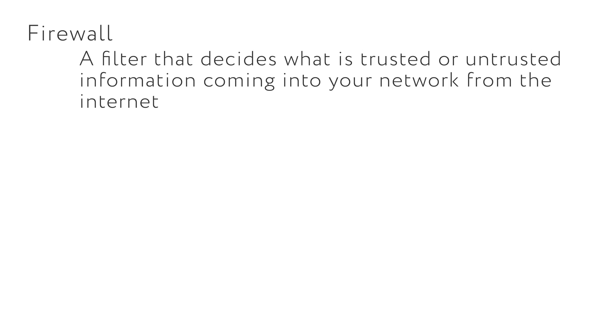This term first came from the physical barriers that were created to prevent the spread of fire in a building. Firewalls in a technology system aren't meant to stop the spread of a real fire. A firewall in a network would digitally block the threat or trap so that it doesn't spread. A firewall is like a filter that decides what is trusted or untrusted information coming into your network from the internet. If the firewall decides the information can't be trusted, it will not let it pass from the internet into your home or school's network. People can also control the settings on a firewall to allow more or less access to sites.